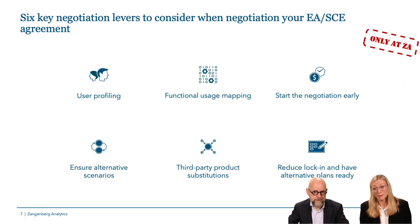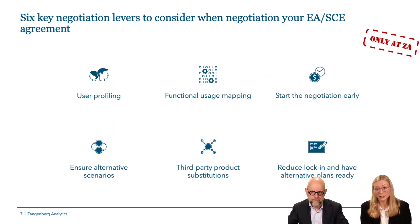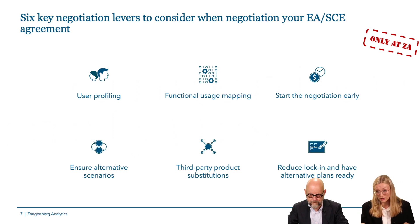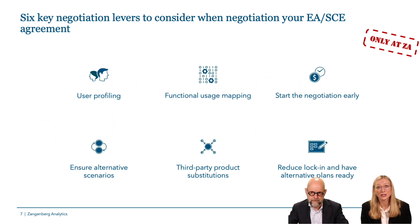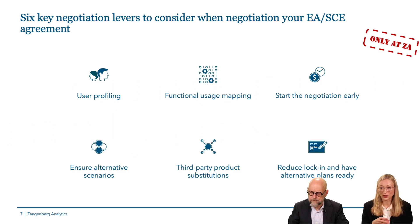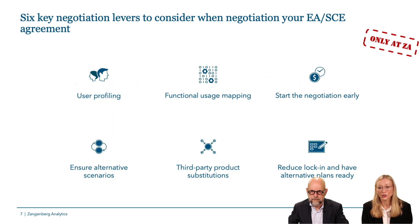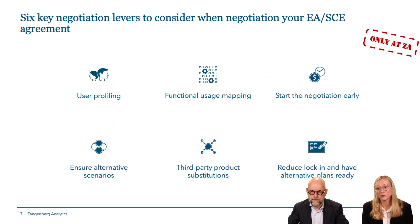Functional usage mapping is another lever — ensure you have the right licenses for all your users. Map out which functionalities in the licenses you are actually using, which you can shut down, and how you can license users in the best possible way with fewer functionalities that still meet your organizational needs. Present to Microsoft: we are using these features, but these five functionalities we are not using.